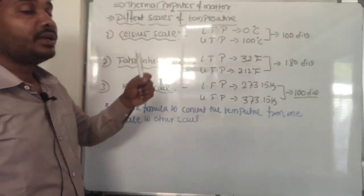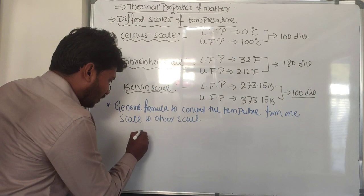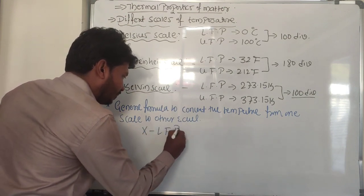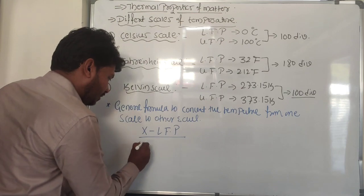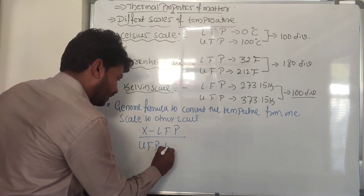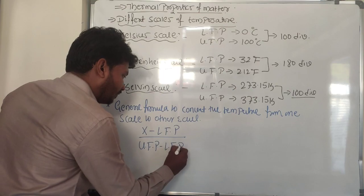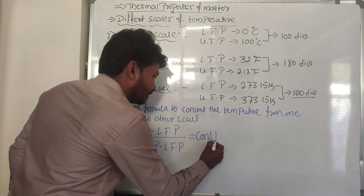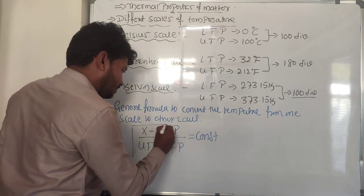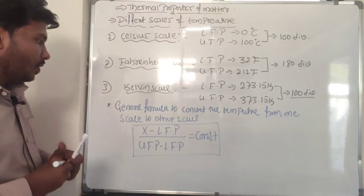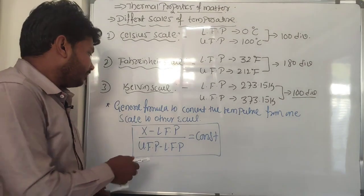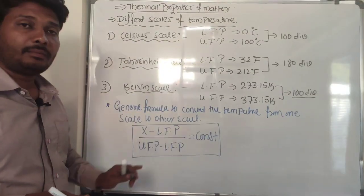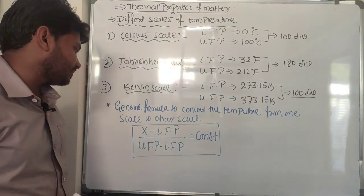The generalized formula for converting temperature from one scale to another is: (X − lower fixed point) / (upper fixed point − lower fixed point) = constant for all scales. This ratio remains the same regardless of which temperature scale you use.